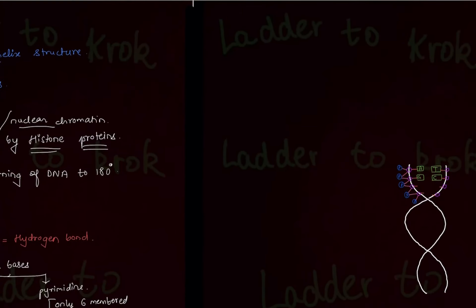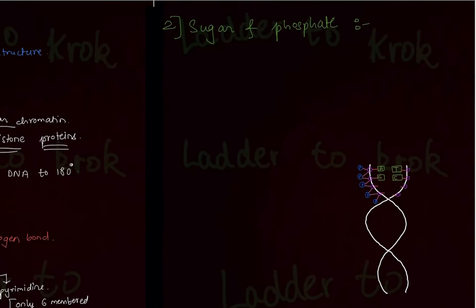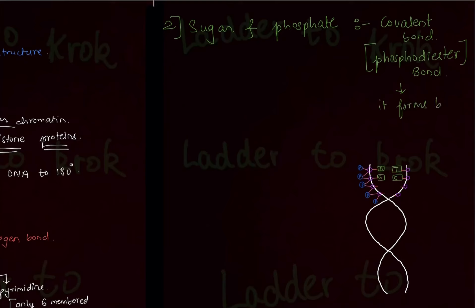The second type of bond in DNA is between sugar and phosphate. This is a covalent bond — more specifically, a phosphodiester bond. An important point: the phosphodiester bond forms the backbone of DNA.